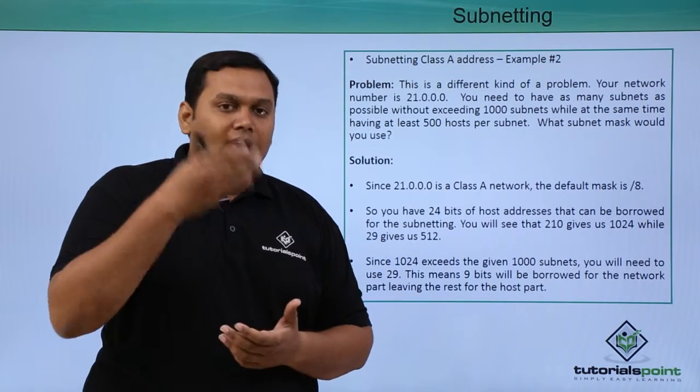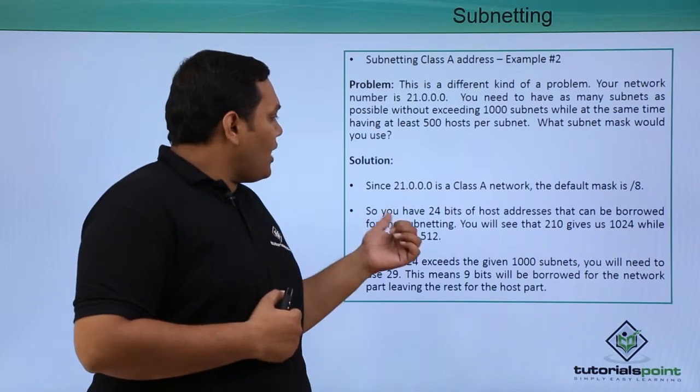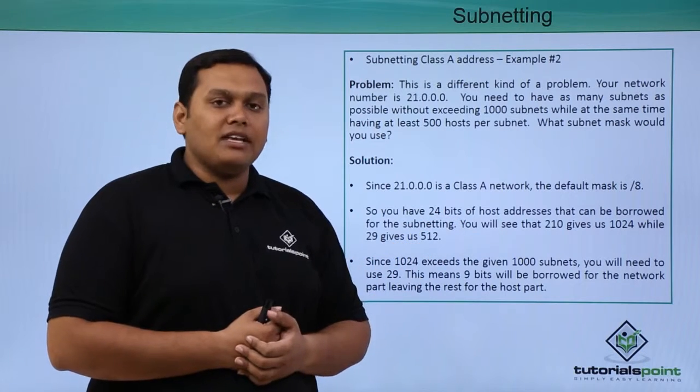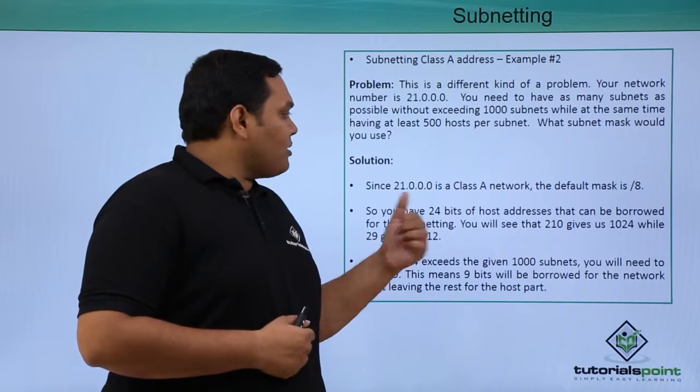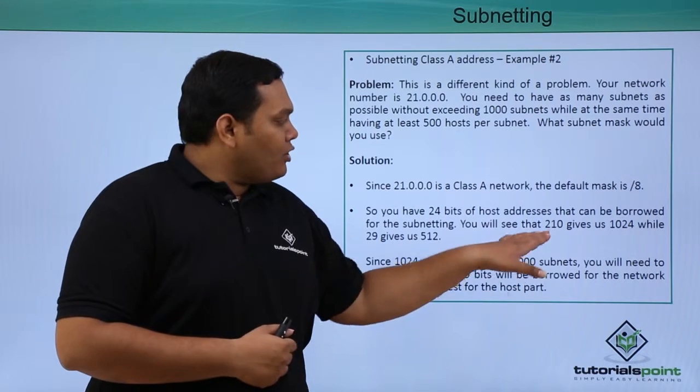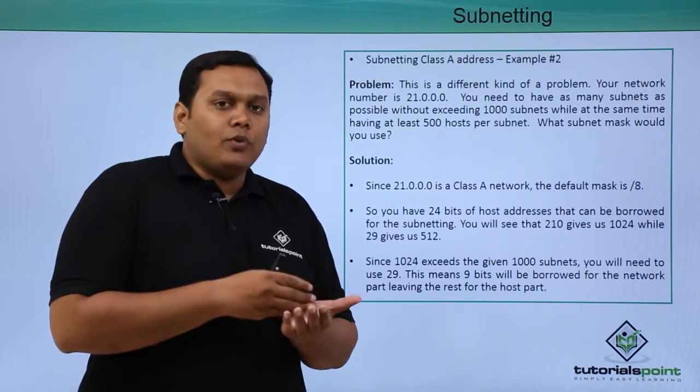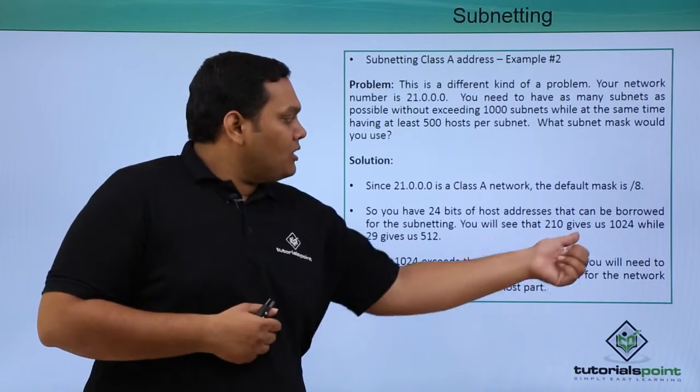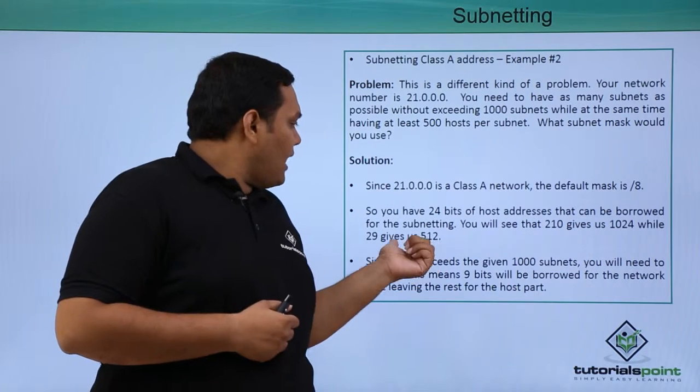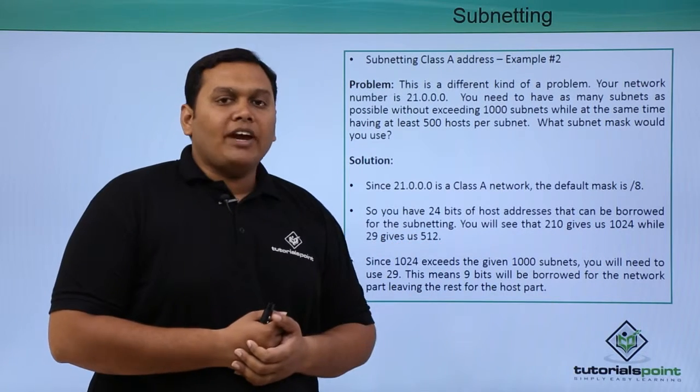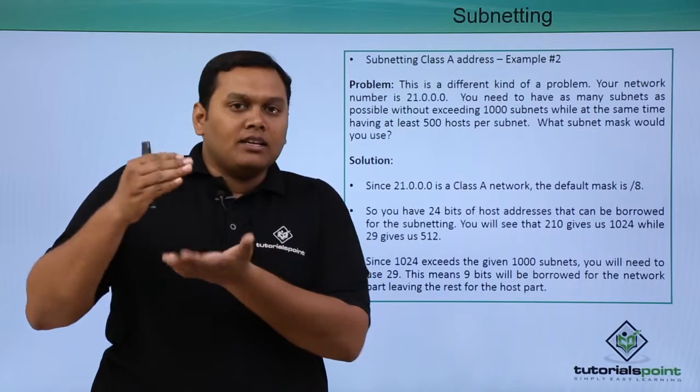The solution is, 21.0.0.0 is a Class A network, so the default mask is /8. You have 24 bits of host addresses available that you can borrow for subnetting. When you borrow, 2^10 gives you 1024 hosts and 2^9 gives you 512 hosts per subnet.